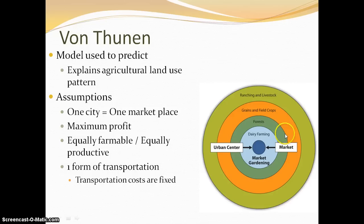Before we move into von Thunen's model — and I've already got it posted over here to the side, so you can go ahead and look at it and look at the different rings — it's really important to note the rings here and know where each of these particular types of agricultural practice take place. There are a couple of assumptions that von Thunen makes as he looks at these agricultural land use patterns. One of the more important ones is that in his model there's only one market and there's only one city.